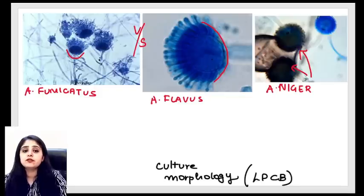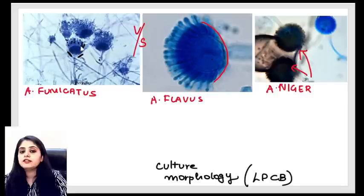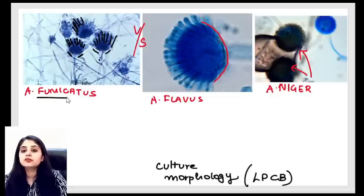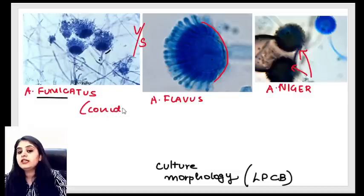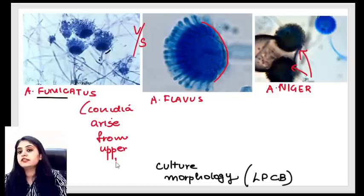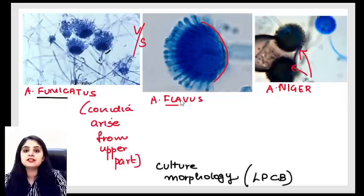Reynolds-Braude phenomenon (germ tube test, GTT) is seen in Candida albicans and Candida dubliniensis — both multiple choice answers are correct. In the germ tube test, you take the Candida colony, put it in serum, incubate for two hours, and observe a germ tube growing out of the organism. This test is positive only for Candida albicans and Candida dubliniensis.